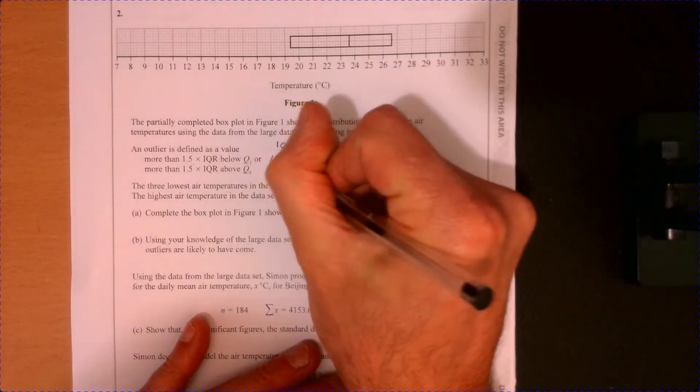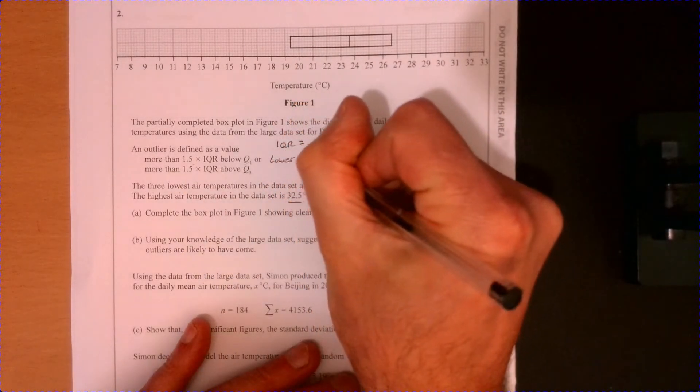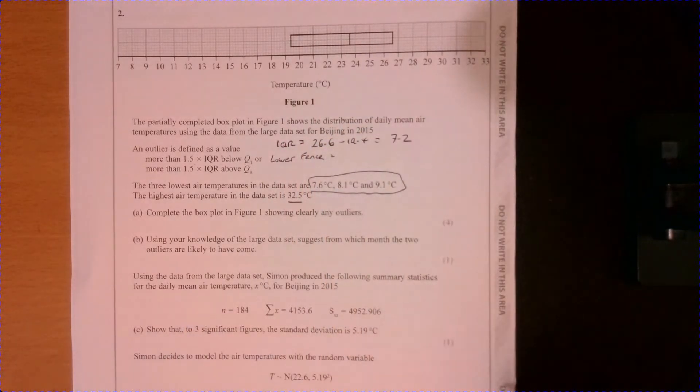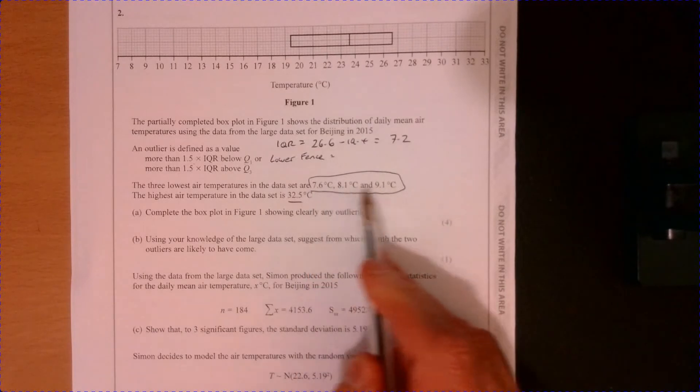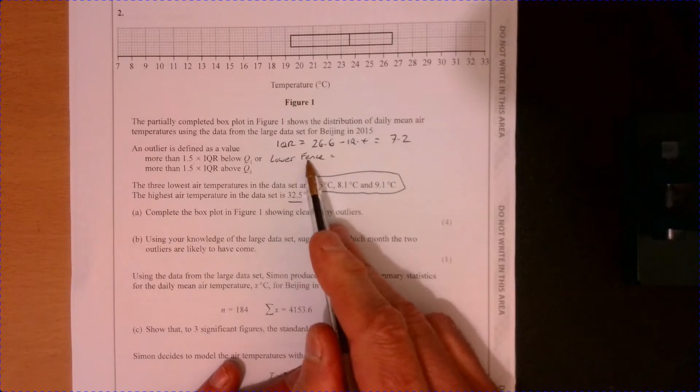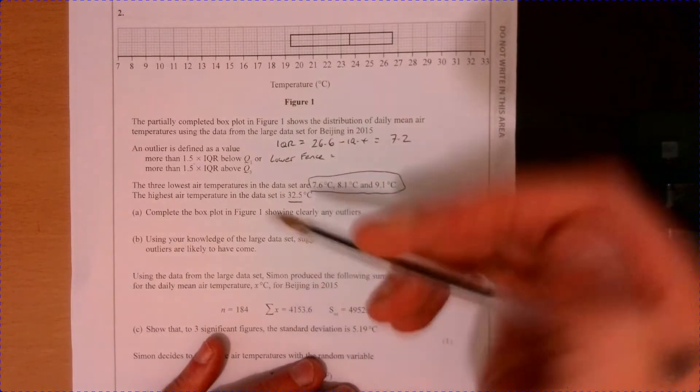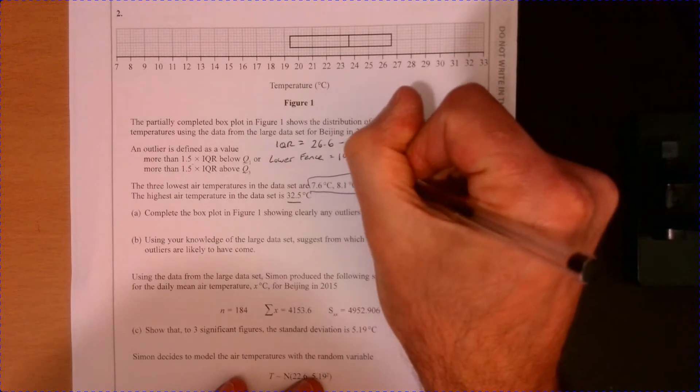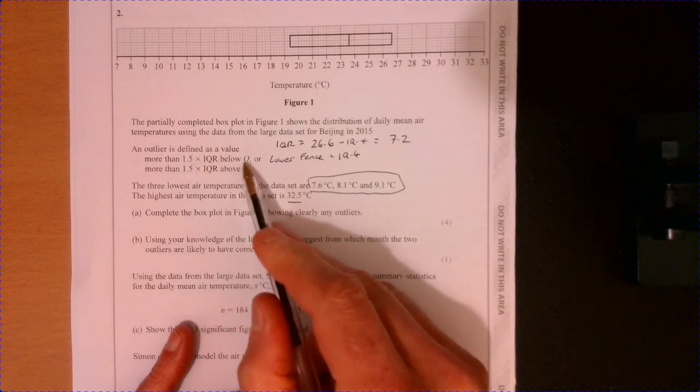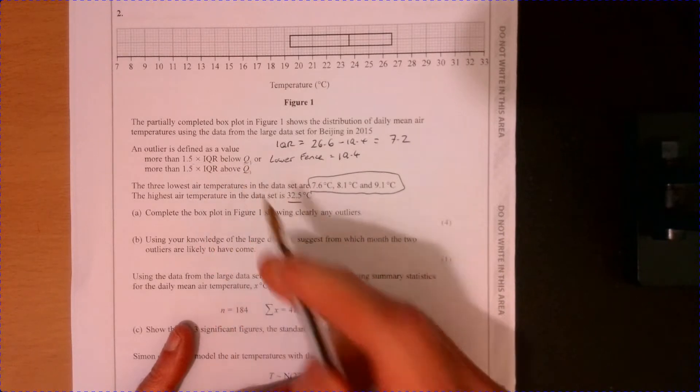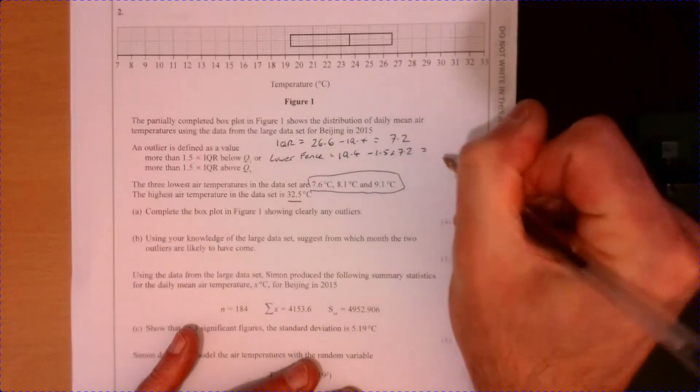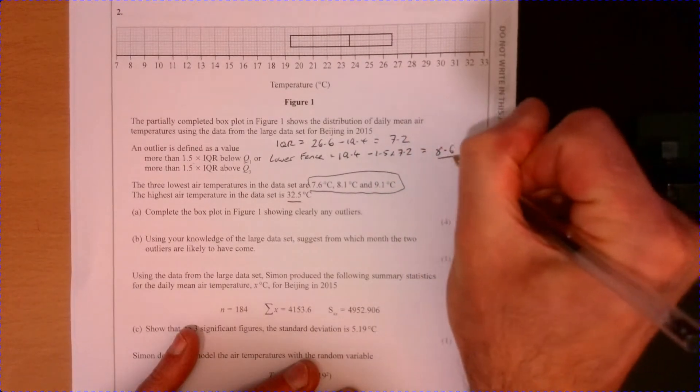Now I need to work out, so I call this the lower fence. So like the lower kind of in terms of what's acceptable before we call it an outlier. I wanna see where this line's gonna be drawn. So the lower fence, I take 19.4, that's the lower quartile. And then we're just gonna do one and a half lots of the interquartile range. So we're gonna take away 1.5 times 7.2 and that equals 8.6.